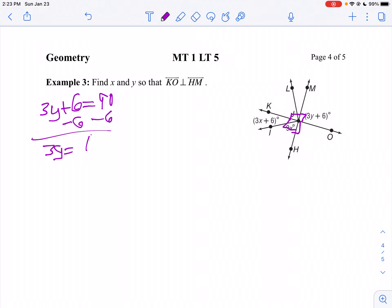3Y equals 84. Then I'll divide both sides by 3. 84 divided by 3 is 28, so Y is 28.